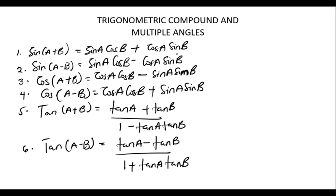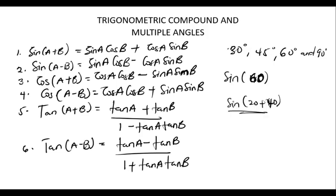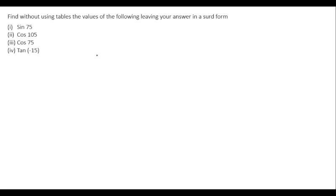Whenever we have angles given to us, it is advisable to break the angles into two angles whose ratios are commonly known — namely 30°, 45°, 60° and 90°. Sin, cos, and tan of these angles are easy to obtain. Try to combine these standard angles by addition or subtraction to get the angle you need to find.